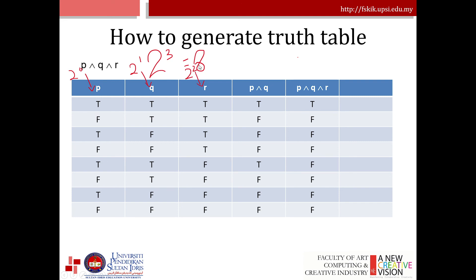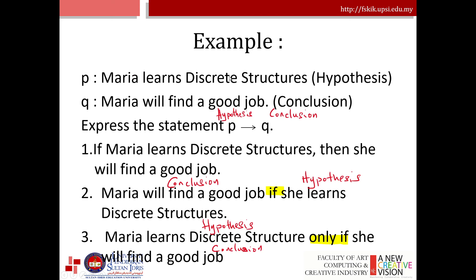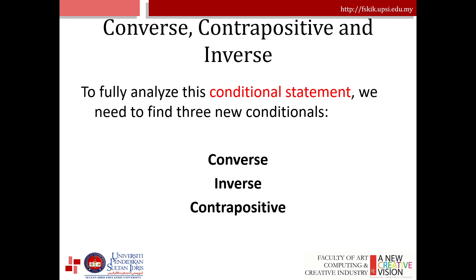Another example in English: 'Maria learns discrete structures' is the hypothesis and 'Maria will find a good job' is the conclusion. You must differentiate the hypothesis and conclusion. Express this as P implies Q: if Maria learns discrete structure then she will find a good job. Alternatively: Maria will find a good job if she learns discrete structure. We will continue in part four — thank you.